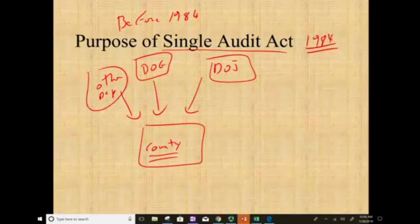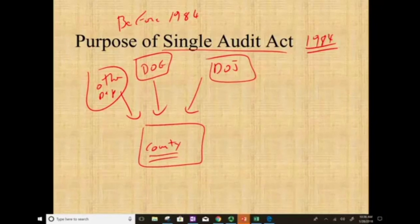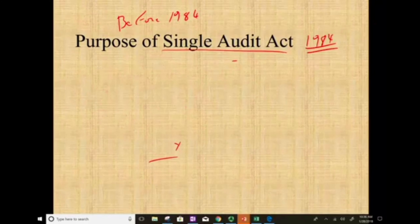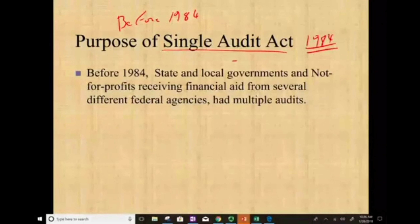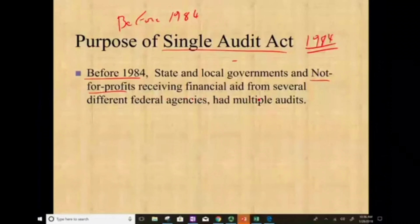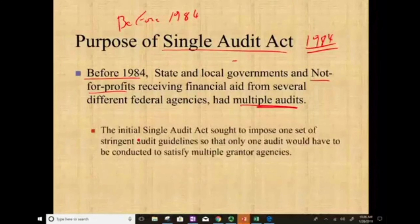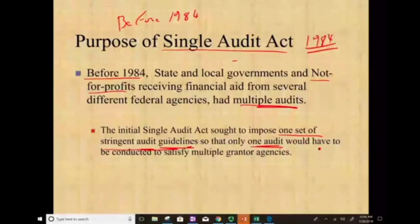Before 1984, each of these agencies would have to do a separate audit, which was not very efficient — you'd have three different audits because each agency wanted a different audit. So they decided: if you receive money from federal agencies, we're going to have a single audit. The initial single audit sought to impose one set of stringent audit guidelines so that only one audit would have to be conducted to satisfy multiple grantor agencies.